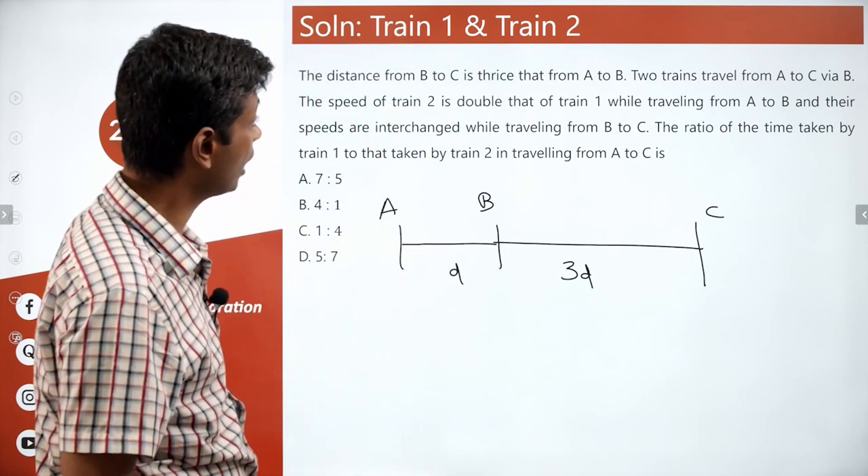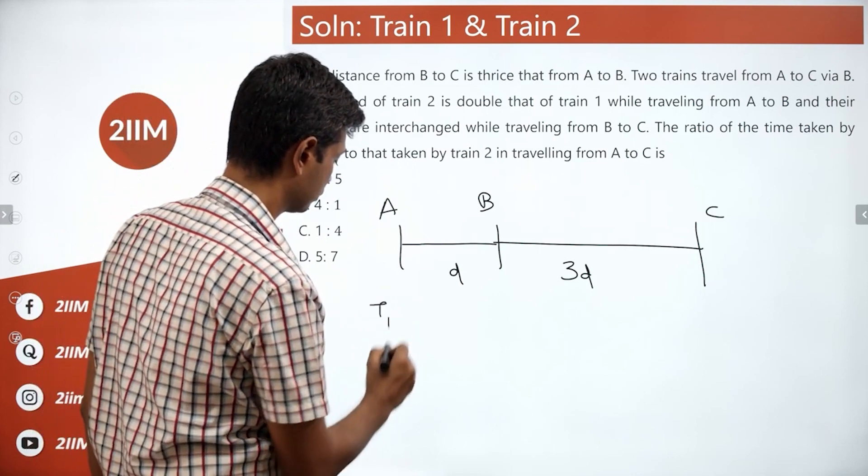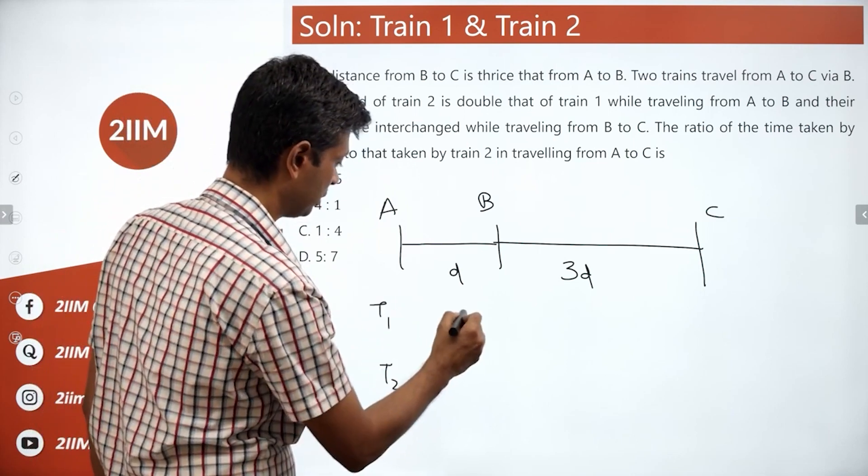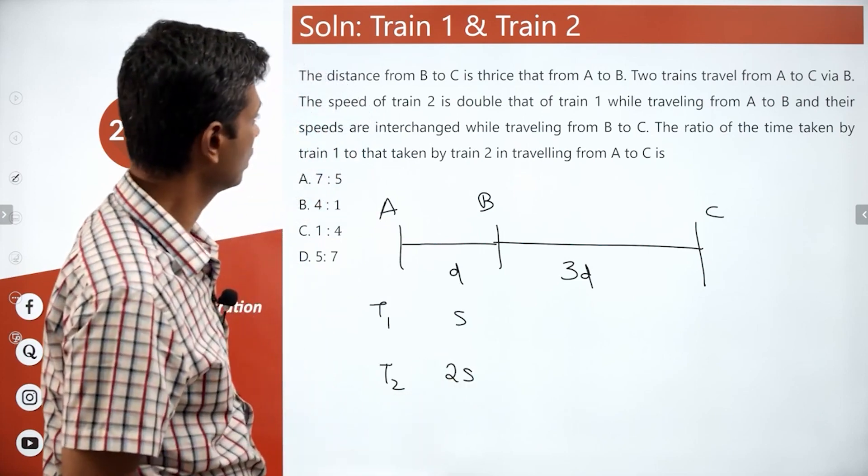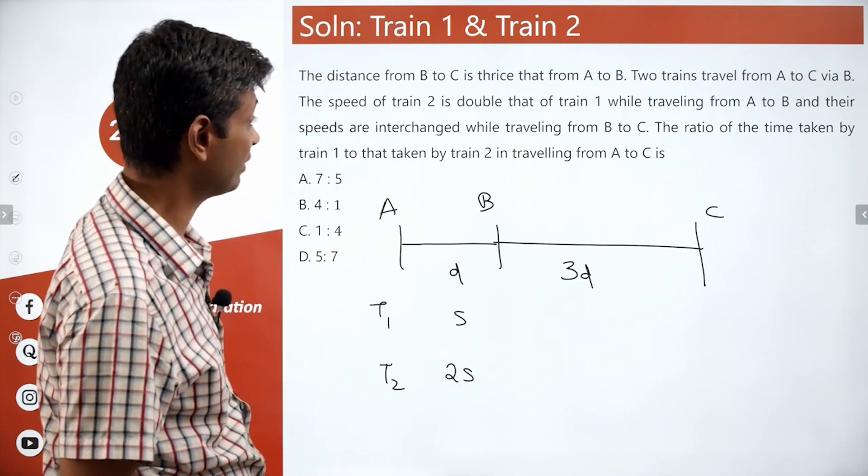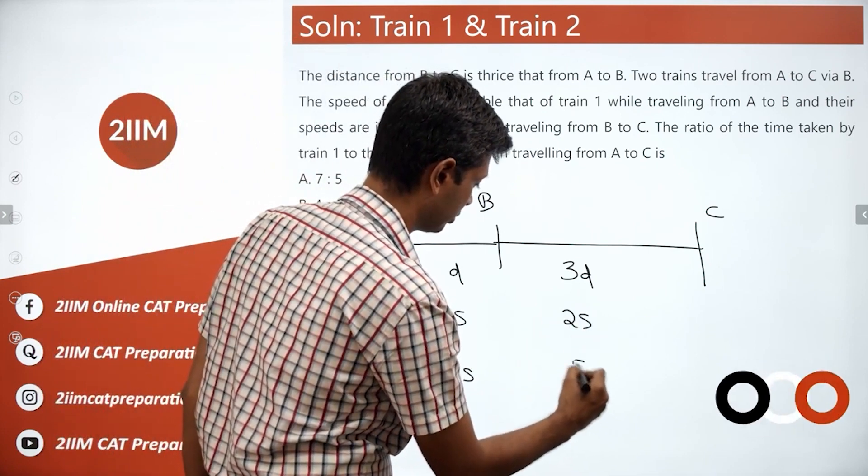The speed of train 2 is double that of train 1 while traveling from A to B. So, this is T1, T2. Speed is S, speed is 2S. And their speeds are interchanged while traveling from B to C. This becomes 2S, this becomes S.